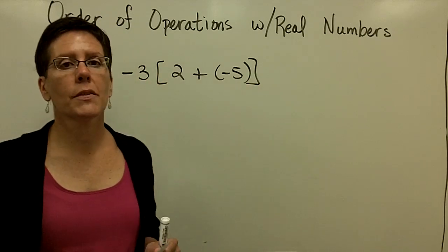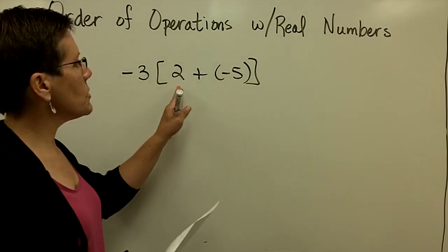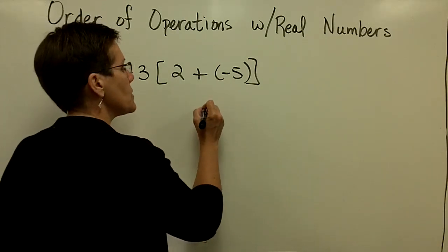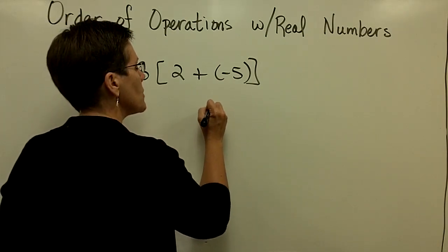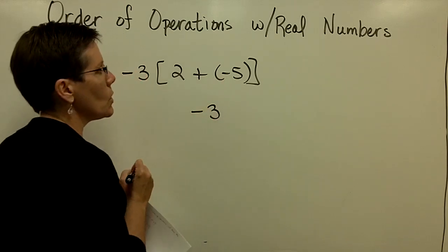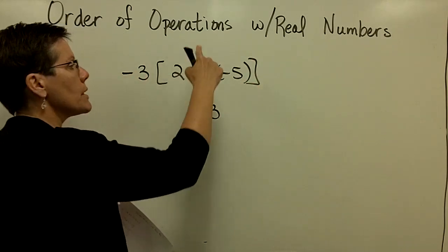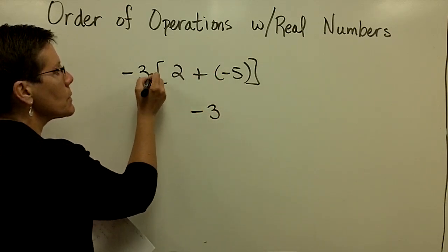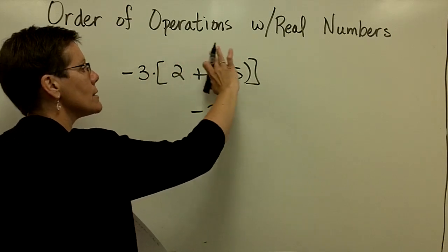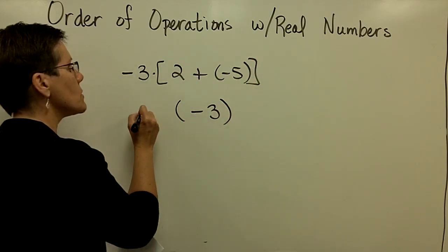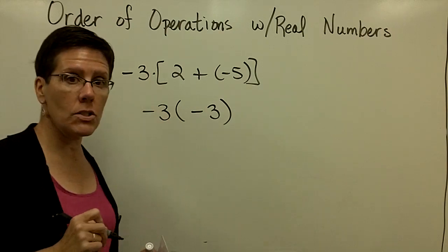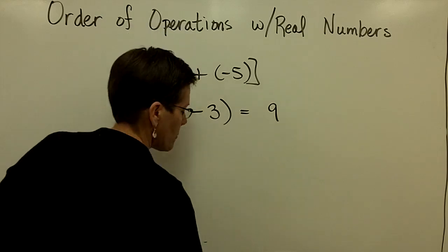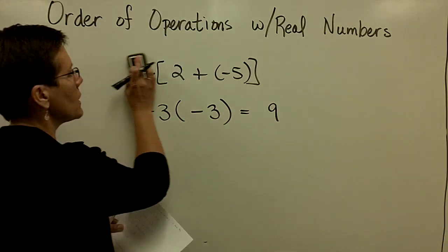Order of operations says to do what's in the parentheses first. So I'm going to take 2 and add negative 5. They have unlike signs so the difference in their absolute values is 3 and that one has more pull. So in this grouping symbol, 2 plus negative 5 equals negative 3. This reads negative 3 times what's in that parentheses. So I'm going to go ahead and put parentheses around it so I can see that that's a multiplication problem. And now I have negative times negative is positive. And I'm done. Let's do another.